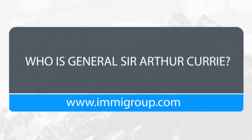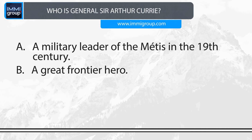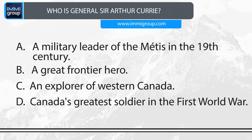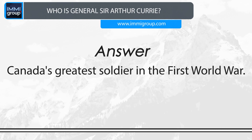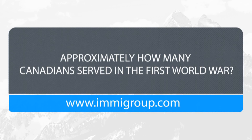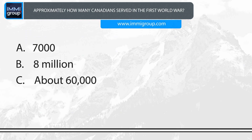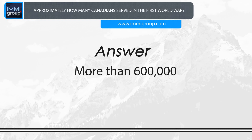Who is General Sir Arthur Currie? A. A military leader of the Métis in the 19th century. B. A great frontier hero. C. An explorer of western Canada. D. Canada's greatest soldier in the First World War. Answer: Canada's greatest soldier in the First World War. Approximately how many Canadians served in the First World War? A. 7,000. B. 8,000,000. C. About 60,000. D. More than 600,000. Answer: More than 600,000.